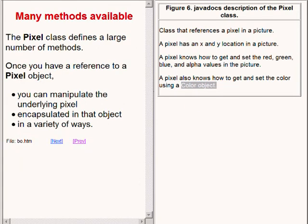The pixel class defines a relatively large number of methods. Once you have a reference to a pixel object you can manipulate the underlying pixel encapsulated in that object in a variety of different ways.